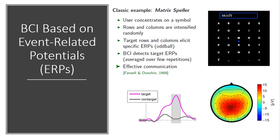Another example I show is based on an exogenous BCI, where human subjects are shown a grid of visual stimuli called a matrix speller. Using this kind of exogenous BCI, we can develop BCI-based communication systems that allow people to type using their brain activity. This is called a BCI based on event-related potentials. The user concentrates on one of the symbols being flashed, usually in a pseudo-randomized order — either rows or columns are intensified randomly.